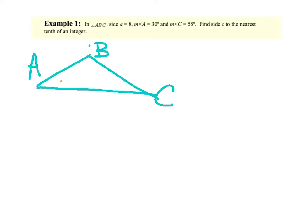Side a measures 8, and remember, a is across from angle A, so I know this is side a, and that gets an 8. Angle A measures 30, so I can put my 30 degrees in there. Angle C measures 55. Find side c to the nearest tenth of an integer. So I'm finding this side. If you want to put an x there, that's fine, to the nearest tenth, so we'll just make sure we round in the end.